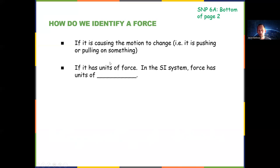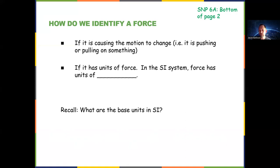Another way to know if something is a force is if it has units of force. The SI unit of force is the Newton — capital N-E-W-T-O-N — with the symbol capital N. The base SI units are kilogram for mass, meter for length, and seconds for time. Velocity has SI units of meters per second, acceleration is meters per second squared. A Newton is actually defined as one kilogram meter per second squared.